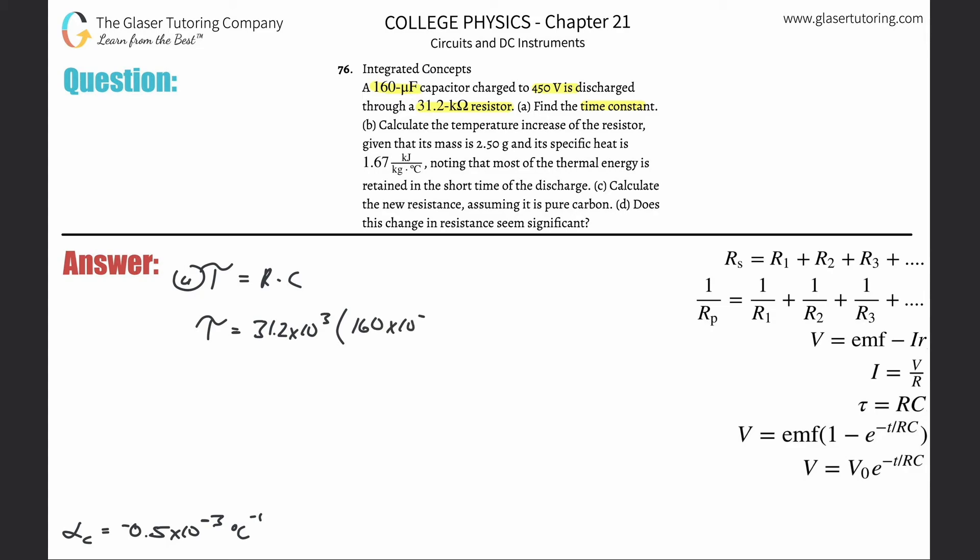And voila, time constant. So 31.2 times 10 to the third times 160 times 10 to the minus 6, and the time constant here is about 4.99 seconds. All right, and that takes care of letter A.